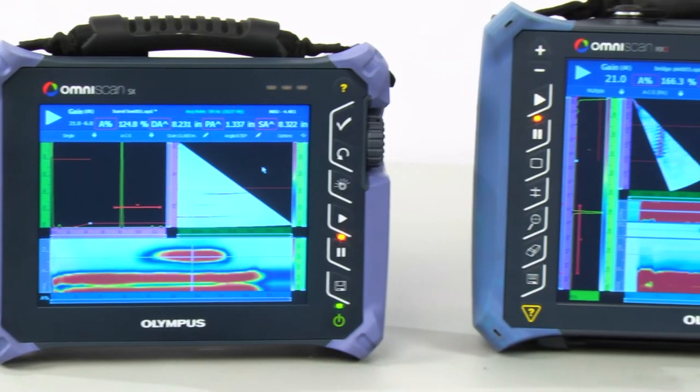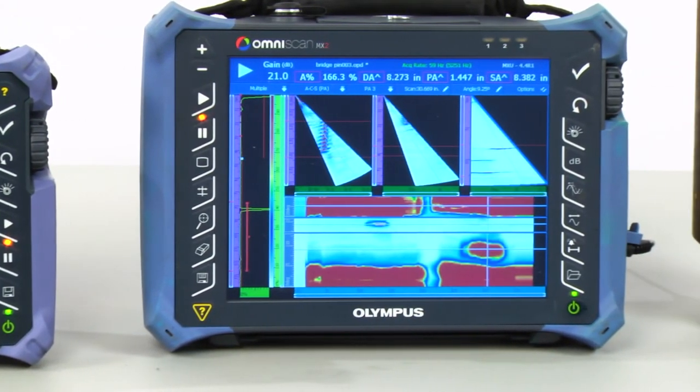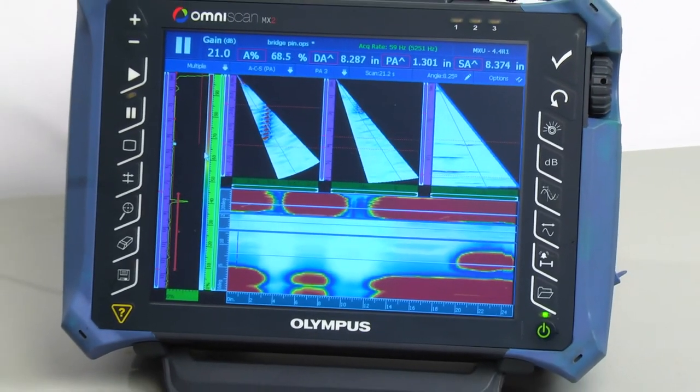When using either an OmniScan SX or MX2 phased array flaw detector to inspect a hanger pin, the group coverage eliminates the need for rastering and enables encoded scanning.